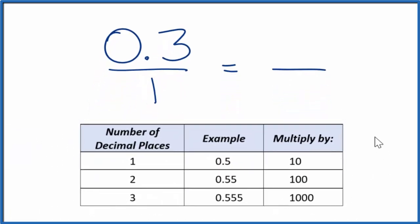Next, since we have one decimal place, so we have one decimal place here, that means we're going to multiply by 10.